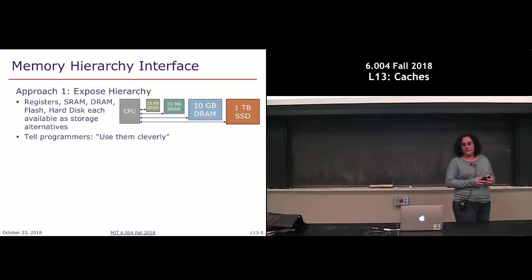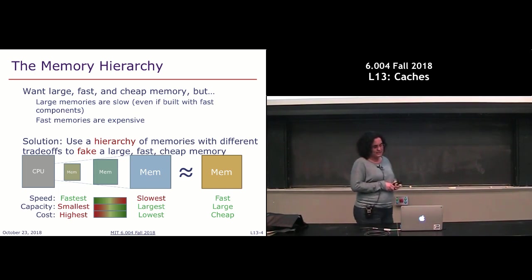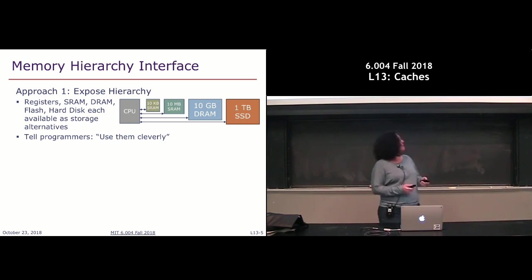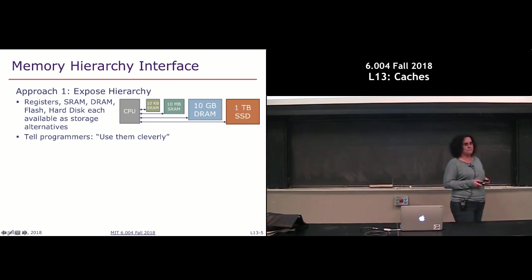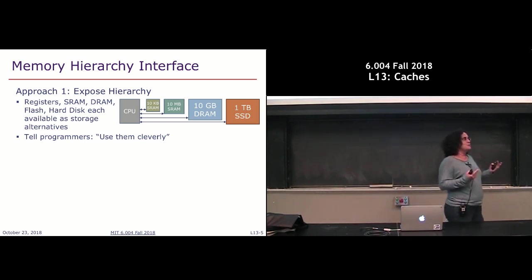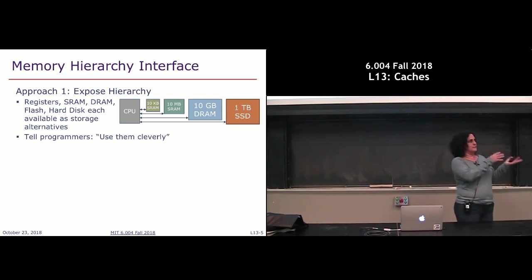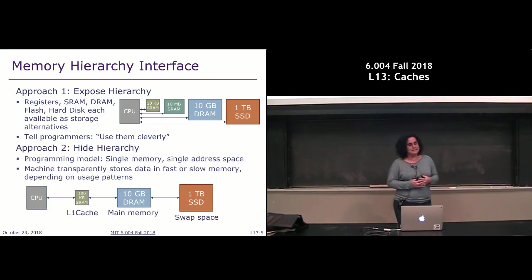There are two approaches we can take. The first is to expose the hierarchy — we tell the CPU you have all these different types of memory technologies. In this model, the programmer actually knows what the memory hierarchy looks like and is responsible for deciding which variables should live in the faster memory and which in the slower memory. While this model was followed for certain computers and worked fairly well, the more common scenario is to hide the hierarchy.